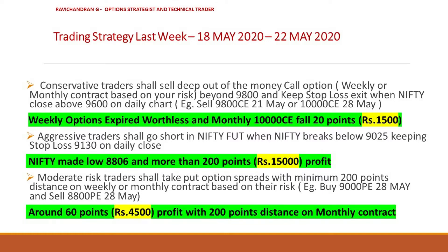For aggressive traders, the strategy was to go short in Nifty futures when Nifty breaks below 9025 with stop loss at 9130 on daily close. The stop loss was not yet triggered, but Nifty made a low of 8806, and this strategy clocked more than 200 points — around 15,000 rupees profit. For moderate risk traders, the put option spread with minimum 200 points distance on weekly or monthly contract: the monthly put option spread with 200-point difference clocked around 60 points, approximately 4,500 rupees profit. All three strategies clocked a good amount of profit last week.